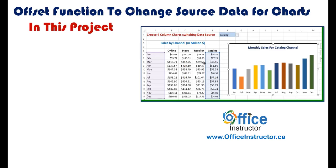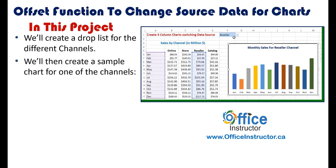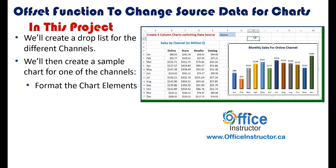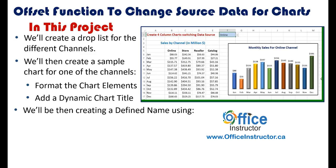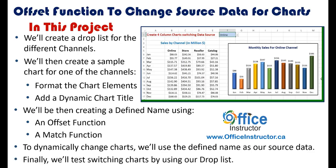In this project, we'll create a drop list — a data validation list — for the different channels. We'll then create a sample chart for one of the channels, format the different chart elements, and add a dynamic chart title. We'll then create a defined name using an OFFSET function and a MATCH function. To dynamically change charts for the different channels, we'll use the defined name as our source data. Finally, we'll test switching charts by using our drop list. We have a lot to learn, so let's see how we build our project from the ground up in Excel.